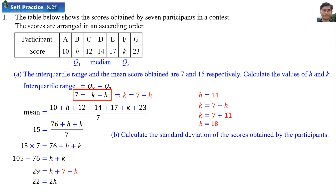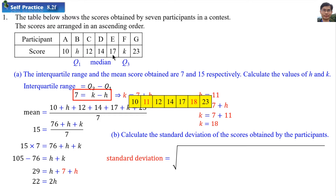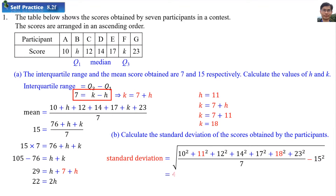Part B: calculate the standard deviation of the scores obtained by the participants. Standard deviation is the square root of variance. Variance is the sum of all scores squared divided by the total number of data (7), minus the mean squared (15²). So the standard deviation is 4.276.